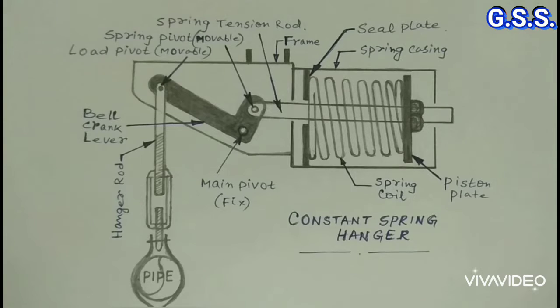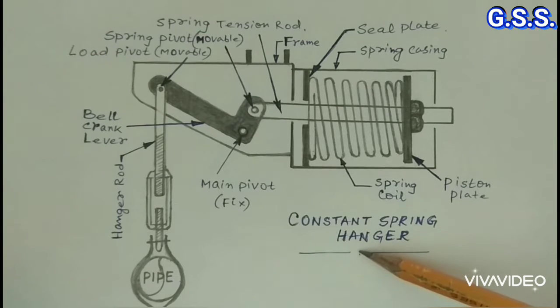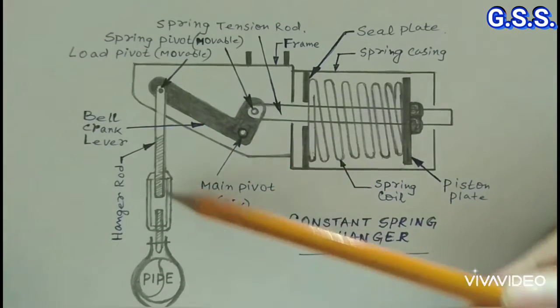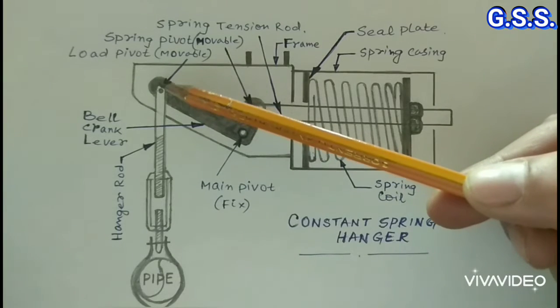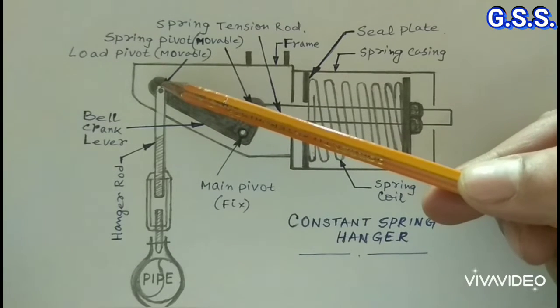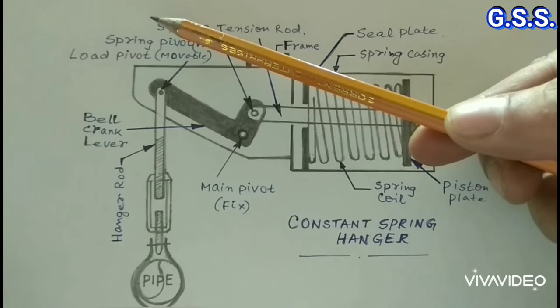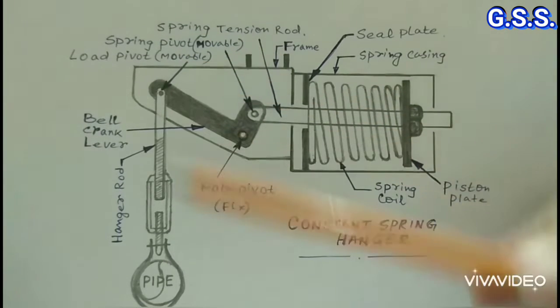To explain the mechanism, I have drawn a sketch of a constant spring hanger where the hanger rod hangs. In case of bottom-supported type constant spring support, instead of a hanger rod, a load column pipe will be on the upper side of the load pivot point to support the pipeline.